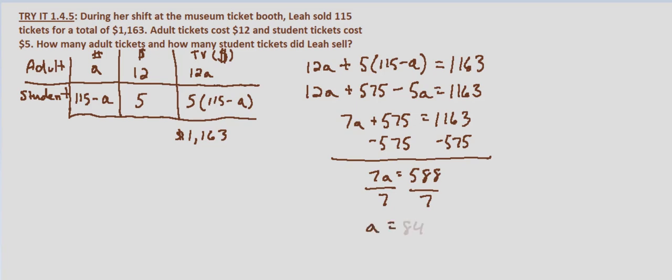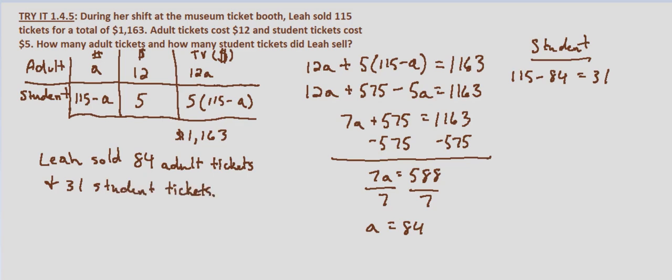So the number of student tickets is 115 minus 84, which equals 31 student tickets. So Leah sold 84 adult tickets and she sold 31 student tickets.